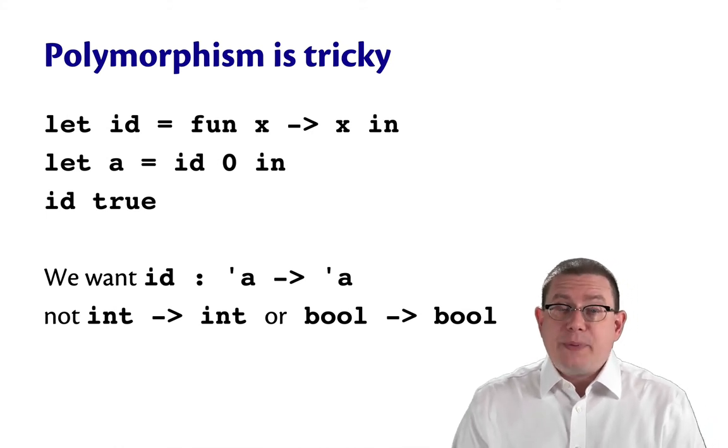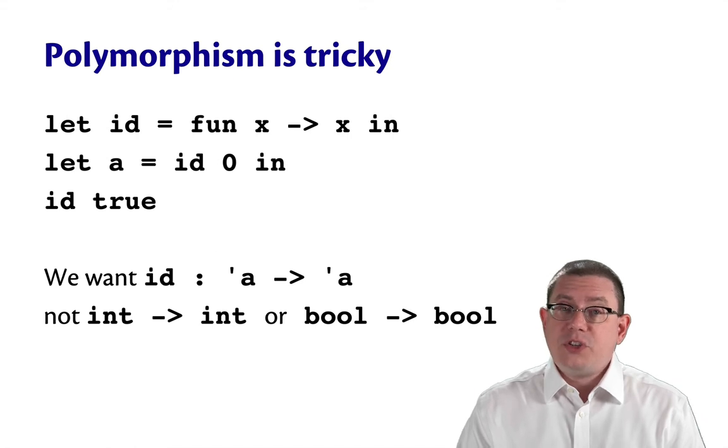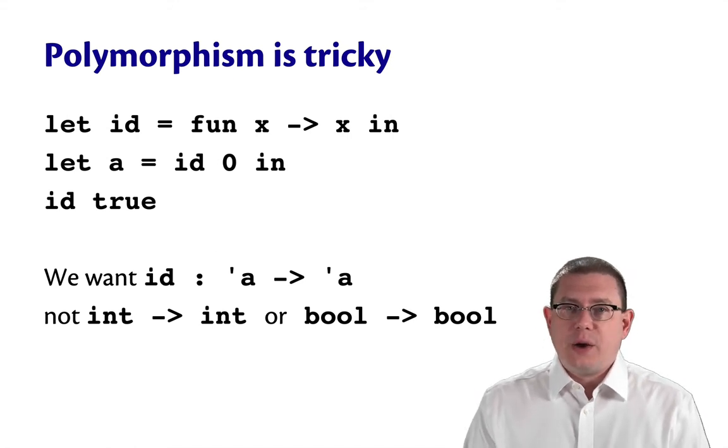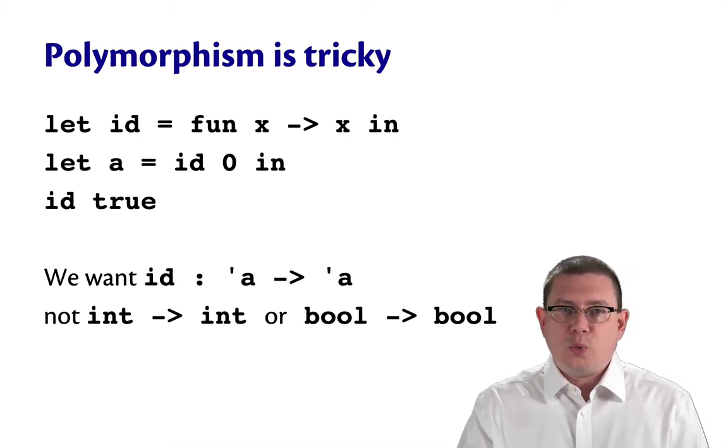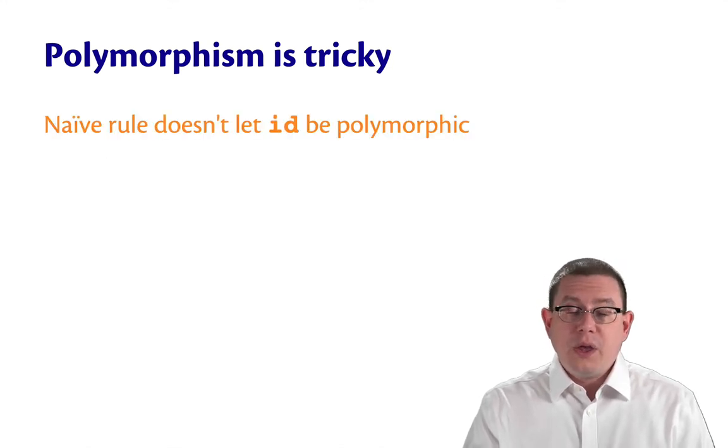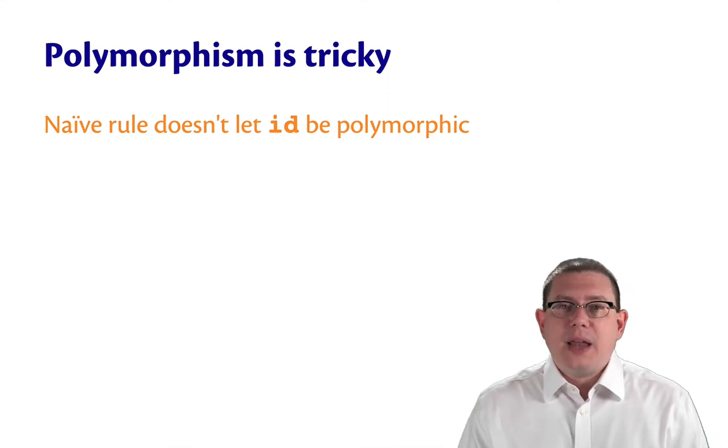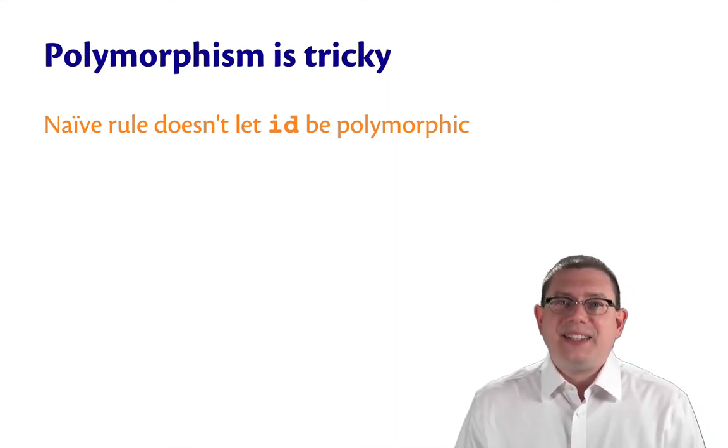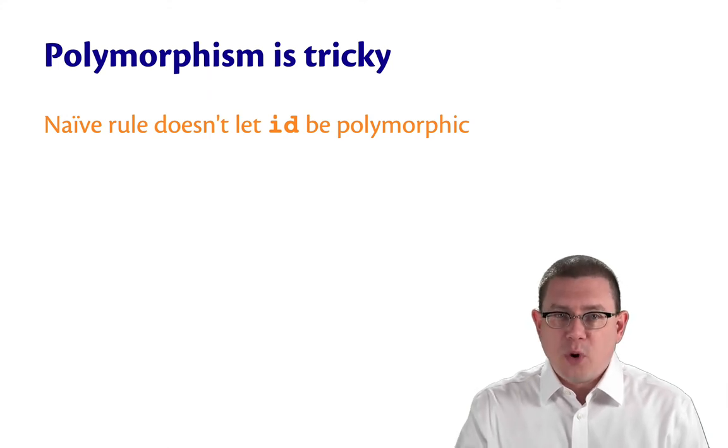Now we ought to be able to do that. That's the nice thing about polymorphic functions. You can use them at many types. That means we want the type of that polymorphic identity function to be alpha arrow alpha. We don't want it to be just int arrow int or bool arrow bool. Either of those would be too specific.